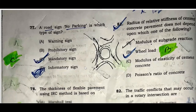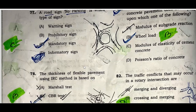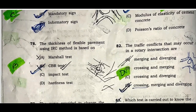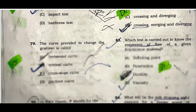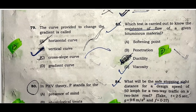Question seventy-seven: A road sign 'No Parking' is a mandatory sign. Question seventy-eight: The thickness of flexible pavement using the IRC method is based on the CBR test. Question seventy-nine: The curve provided to connect gradients is called a vertical curve.